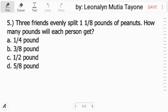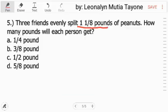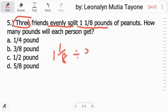Question number 5. 3 friends evenly split 1 and 1 eighth pounds of peanuts. How many pounds will each person get? There are three of them. Evenly split. So that means, we divide. Divided by 3. This mixed number 1 and 1 eighth, let's convert it to an improper fraction before we divide. 8 times 1 equals 8 plus 1 equals 9. So 9 over 8. In other words, 1 and 1 eighth is the same as 9 over 8.